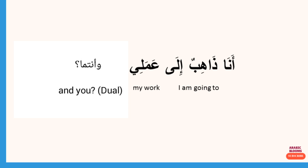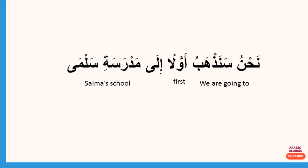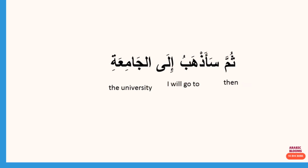وأنتما — And you (dual). نحن — that's plural, it means 'we'. سنذهب — so this سـ refers to the future, it comes before the present tense. The verb in the present tense with the prefix سـ or the word سوف refers to the future. سنذهب — we will go. أولا — first. إلى مدرسة سلماء — to Salma's school. ثم — then, meaning after a while. سأذهب إلى الجامعة — I will go to university.